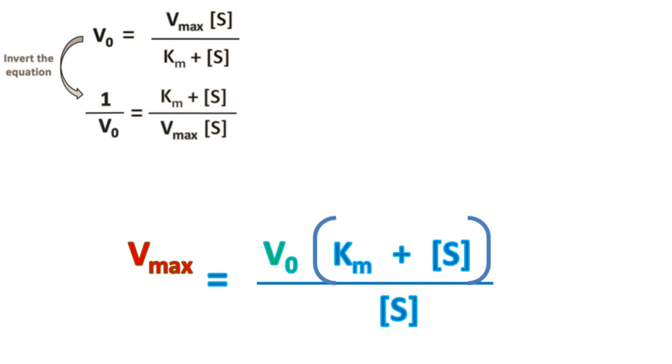Multiplying V0 on the right-hand side, we get Vmax equals V0 into Km plus V0 into S upon S.